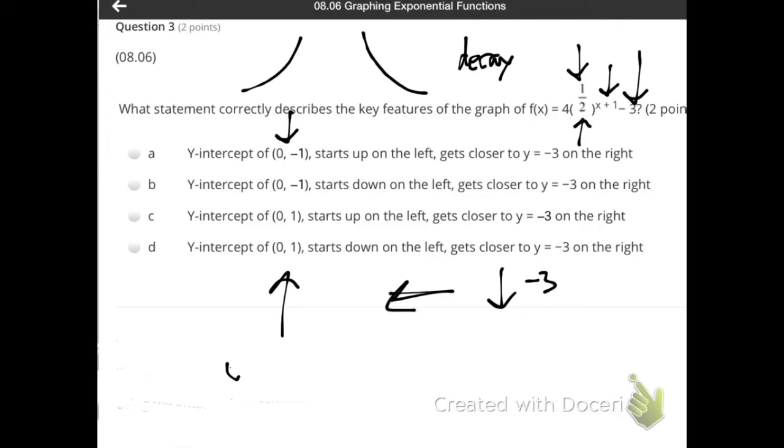Your y intercept will come when you plug in zero for x. So when you plug in zero for x, let's see, we have one half right there. We have x plus one minus three. Plug in zero for x and you'll get your y intercept there. So I'm going to plug in zero for x. The proper terminology is substitution. So zero plus one, zero plus one gives me one. Now one half to the one or to the first power is just going to be one half. So I'm just erasing as I go. And four times one half gives me two. Four times one half is just two. So two minus three equals negative one. And negative one should be where your y intercept is.